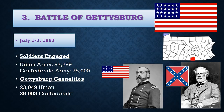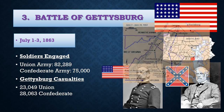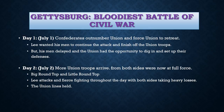General Meade led the Union forces against Robert E. Lee's Confederates and Meade ultimately won the entire battle. This battle lasted over three days and was the bloodiest battle of the Civil War. On day one, the Confederates outnumbered the Union and forced them to retreat. Lee had wanted his men to continue the attack and finish off the Union troops, but his men delayed, giving the Union the opportunity to dig in and set up their defenses.